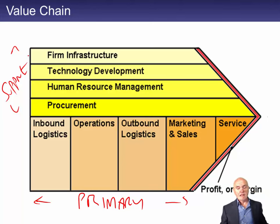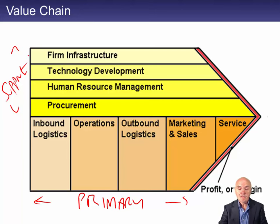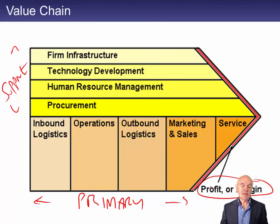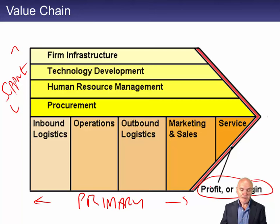What you have here are all the activities — all the things a company does. And if it's adding value, if it does things right, the result will be profit or margin. The company has to think carefully how it's going to organise these activities to generate profit. Let's go through what the various activities are.